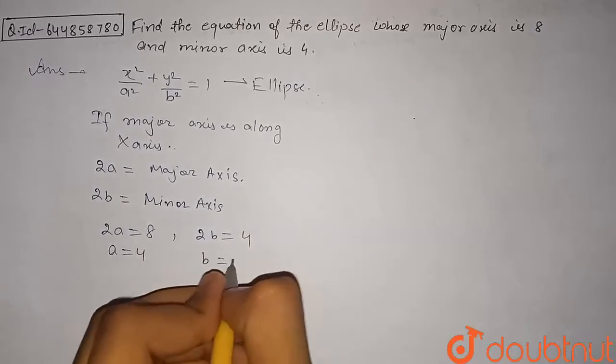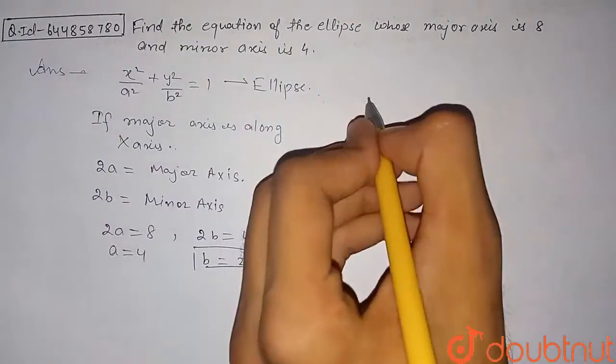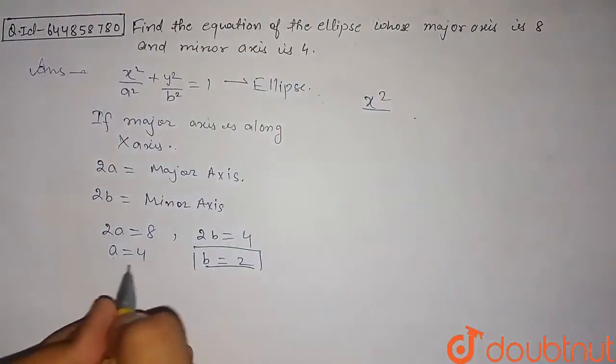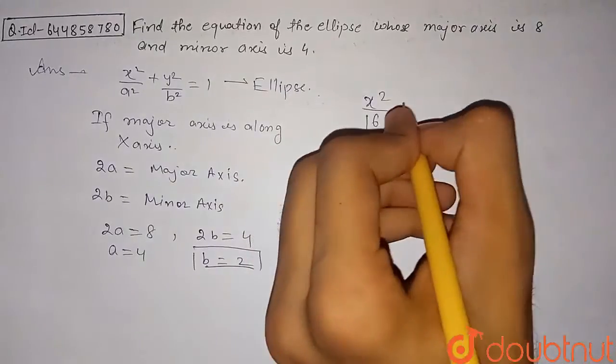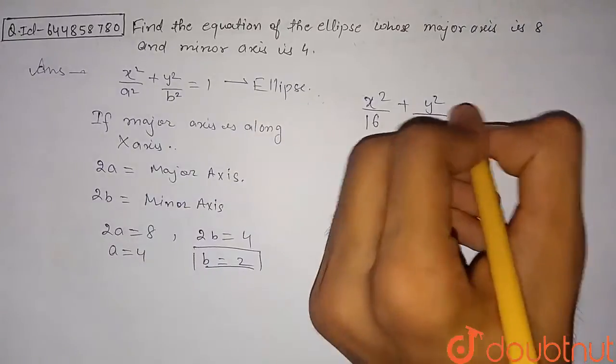From here, our ellipse equation is x²/a², that is 4², which is 16, and y²/b², so b² will be 2², that is 4, and this equals 1.